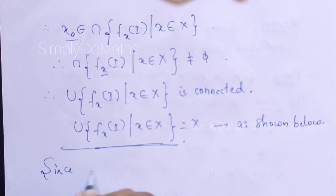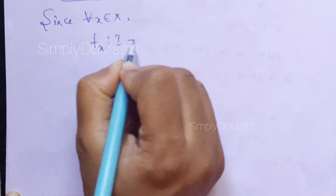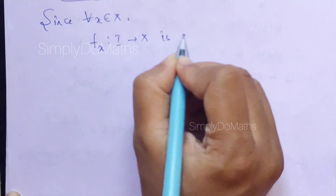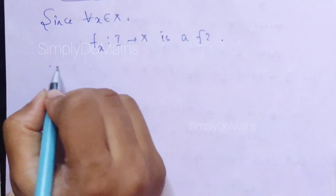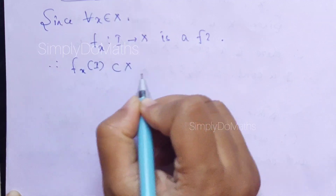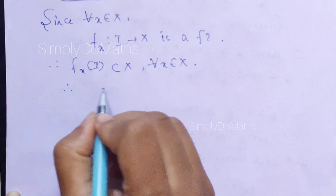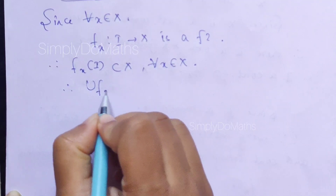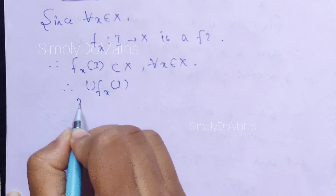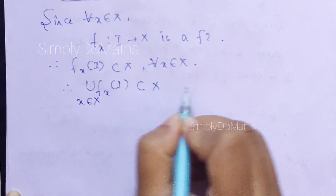Since for all x belonging to capital X, f_x from I to X is a function, therefore f_x(I) is a subset of X for all x in capital X. Therefore, the union of f_x(I) over all x in capital X is a subset of capital X. Call this equation 1.